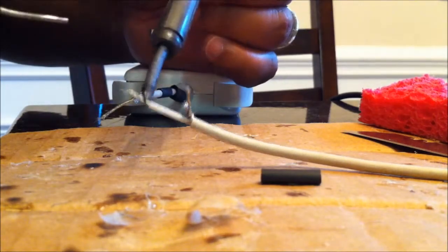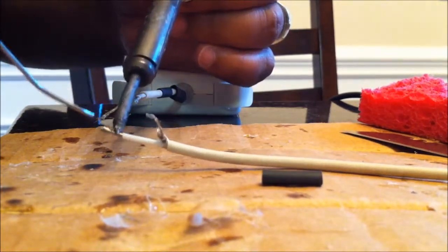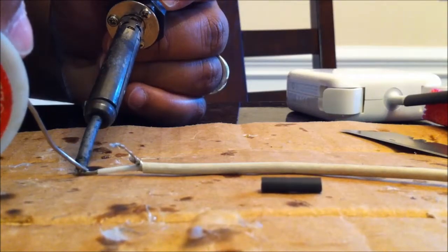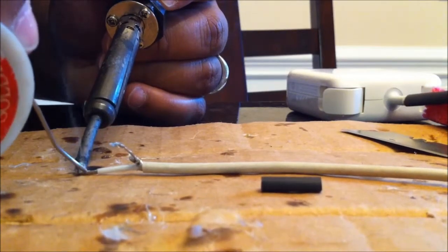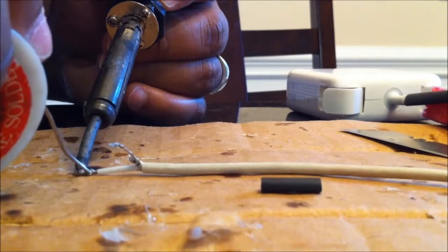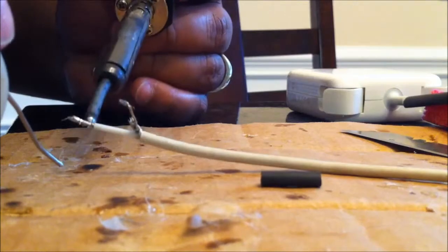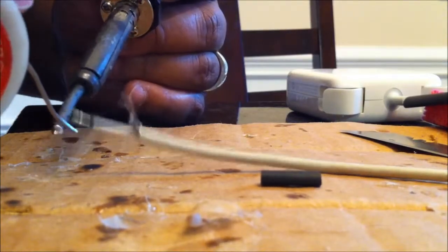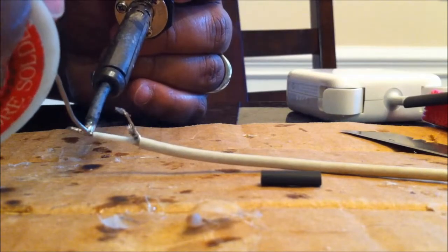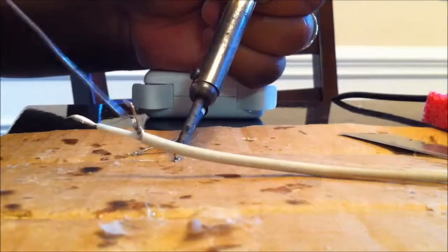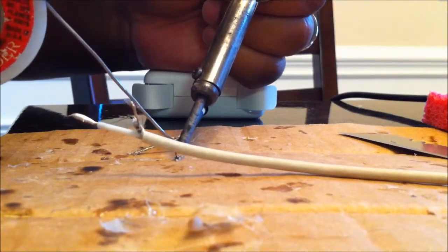I'm going to prep the wires. I'm going to tin them with some solder. So I'm going to just heat up the wire and flow some solder through the wire in preparation to connect it to the other wire. Once that is done, I will tin the other side as well.